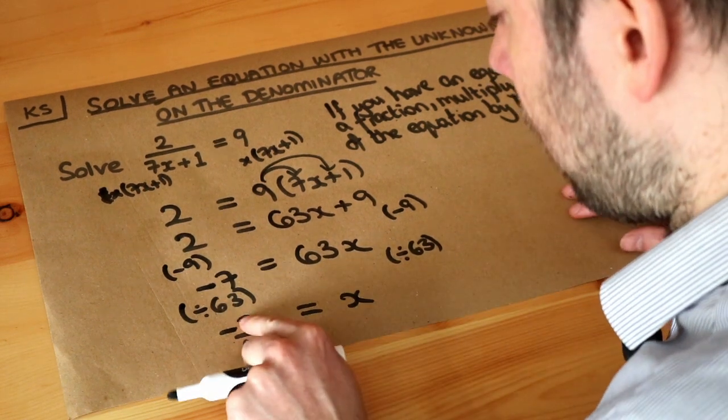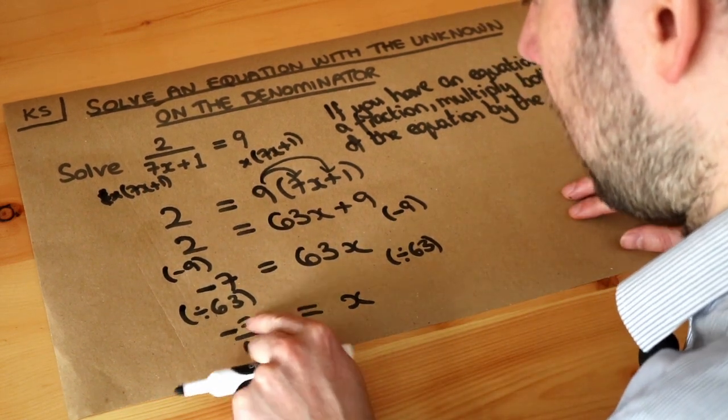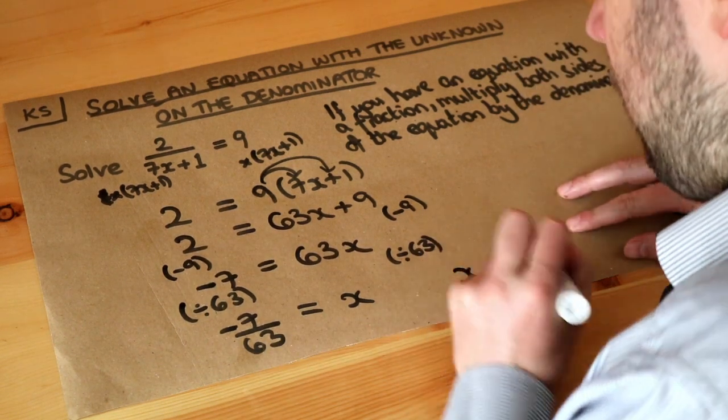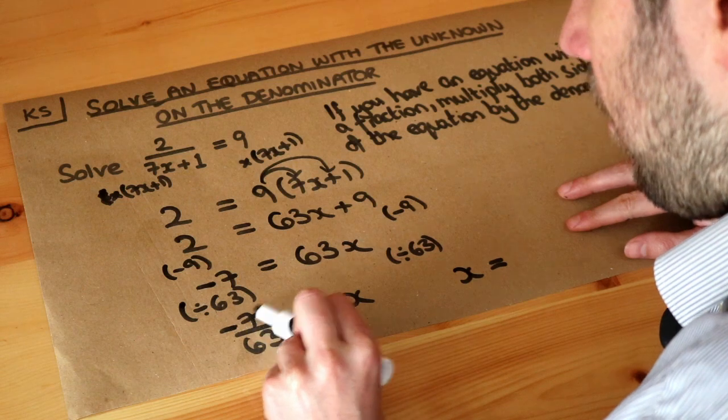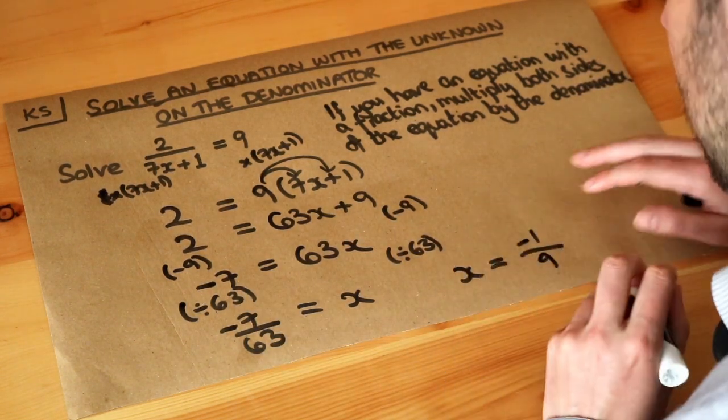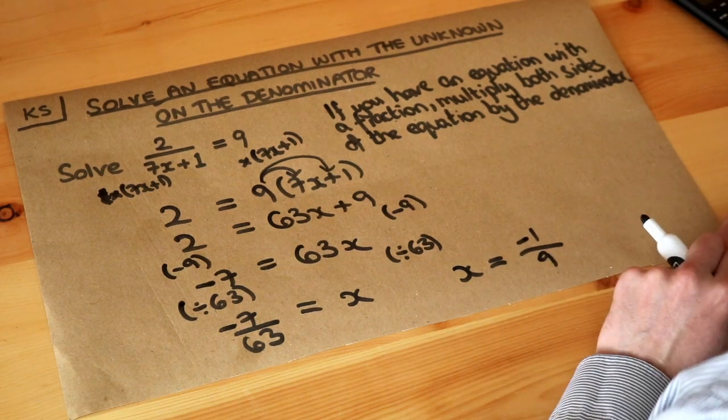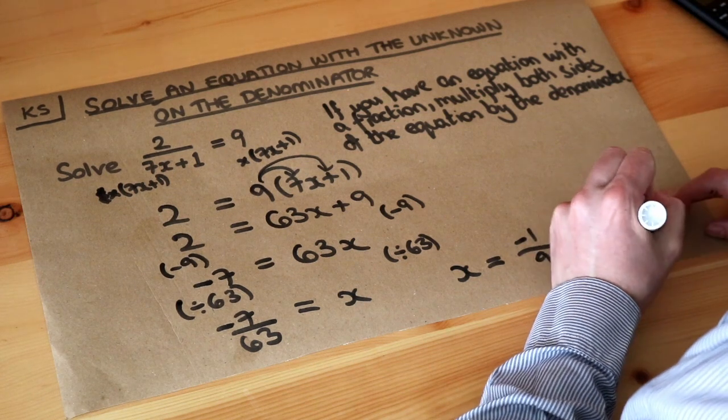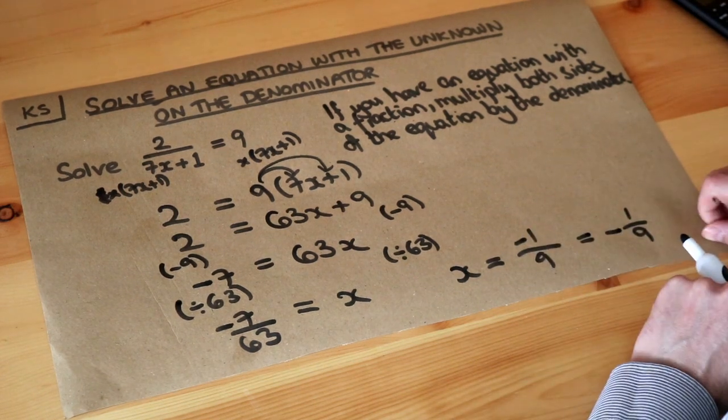Now this does simplify because we could divide top and bottom this fraction by 7, because 7 does go into 63. So if we divide the top by 7, we just get minus 1. And if we divide the bottom by 7, we just get 9. So the final answer is that x is equal to minus a ninth. If you wanted to, you could put the minus on the front, so minus a ninth, like that, which I personally prefer.